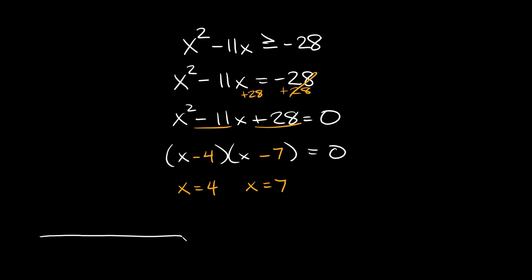Here's the number line. We plot 4 right here and 7 right here. This time we use closed circles, because if you look at the original inequality, we have the equal to symbol attached — greater than or equal to means closed circles.